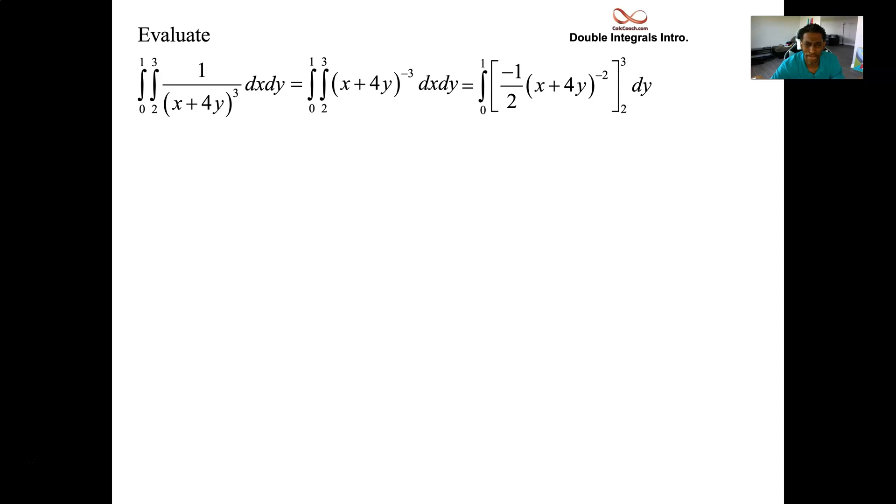So raised to the negative two divide by negative two. All right. Now, you could put the three in and put the two in. So three plus four y to the negative two. Two plus four y to the negative two. Upper limit minus lower limit. And if there's a constant, my advice is to pull the constant out. In fact, you can pull it all the way out.